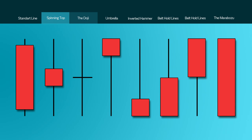The third candlestick has little or no real body and is known as a doji. This forms when a security or an index's open and close are virtually equal. The length of the upper and lower shadows can vary, and the resulting candlestick looks like a cross, an inverted cross, or a plus sign. Alone they are neutral patterns, but any bullish or bearish bias can be seen in the preceding price action and future confirmation. For reference, the word doji refers to both the singular and plural form.